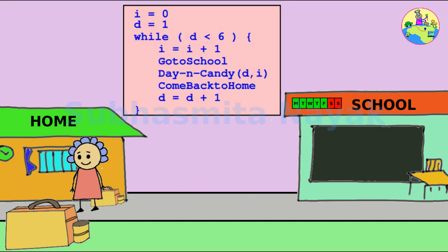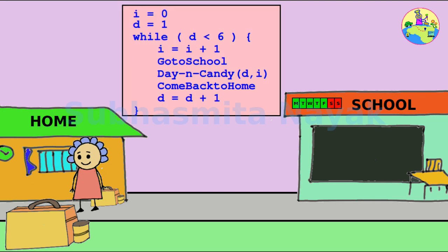So, if we go through this code, day number d equals 1 at the start of the loop. Then it checks for condition d less than 6. It's good.